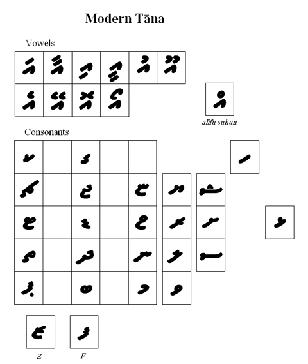The order of the Tanna alphabet doesn't follow the order of other Indic scripts or of the Arabic script. There is no apparent logic to the order. This has been interpreted as suggesting that the script was scrambled to keep it secret from average islanders.